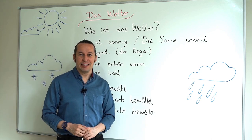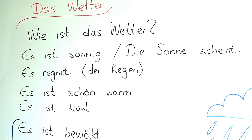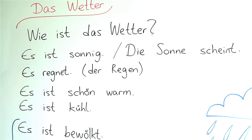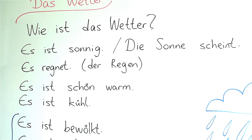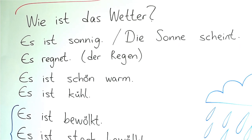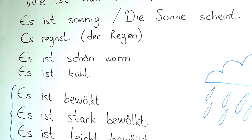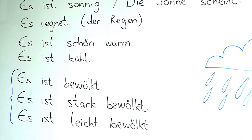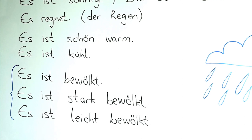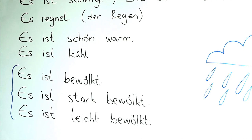I want you to repeat after me, please. Wie ist das Wetter? Es ist sonnig. Die Sonne scheint. Es regnet. Der Regen. Es ist schön warm. Es ist kühl. Es ist bewölkt. Es ist stark bewölkt. Es ist leicht bewölkt.